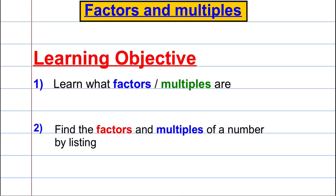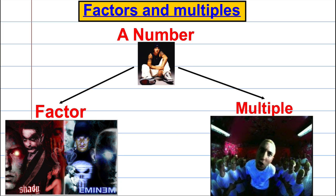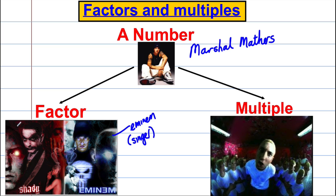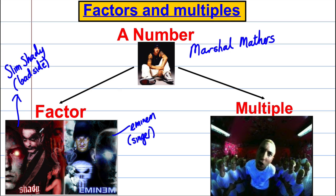Here's my idea about factors and multiples and M&M. We know this man — his real name is Marshall Mathers. He has two sides to him, alter egos: M&M the singer and another alter ego called Slim Shady. You can think of the factors of Marshall Mathers as the parts that make him up — some of him is the Slim Shady part and some is the M&M singer part.